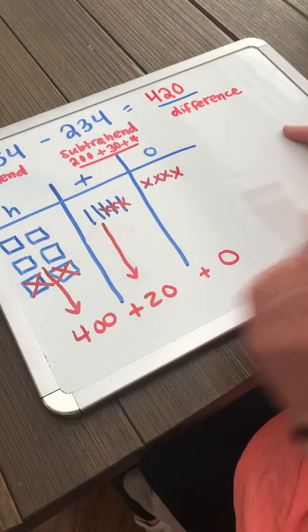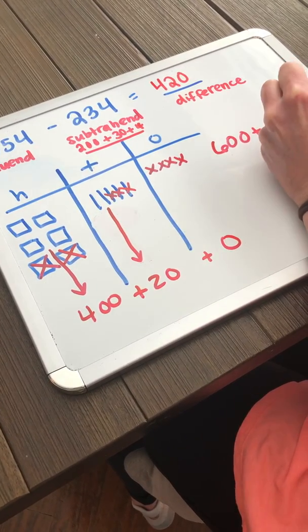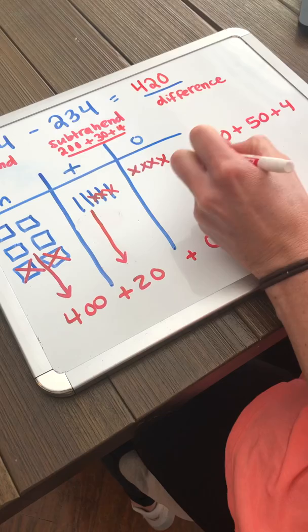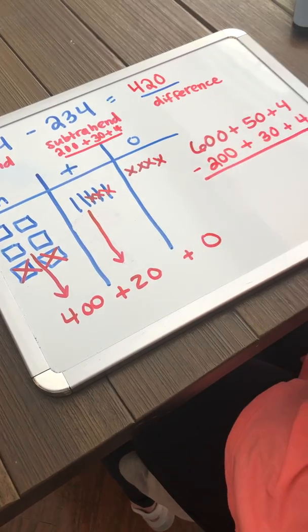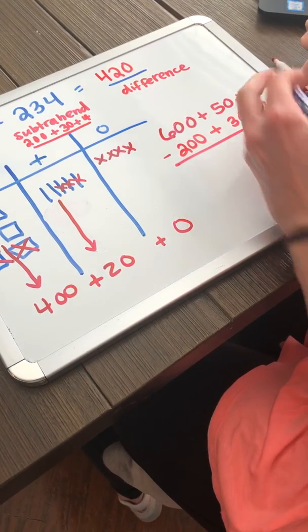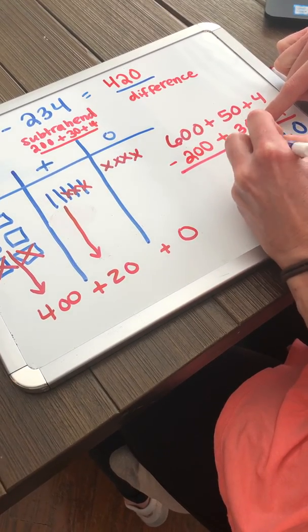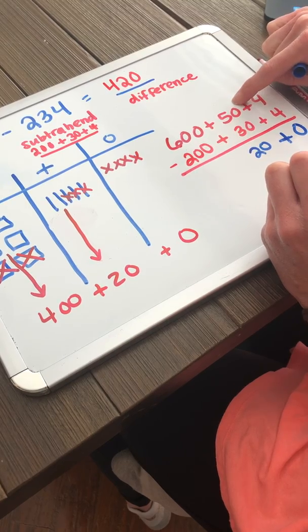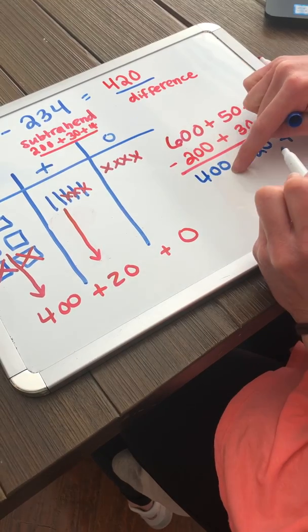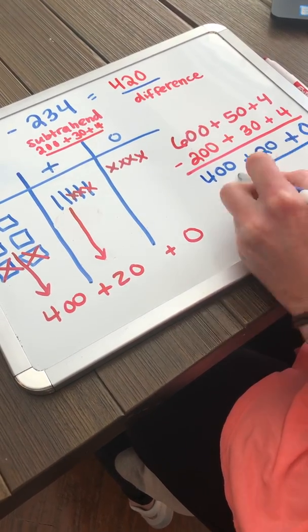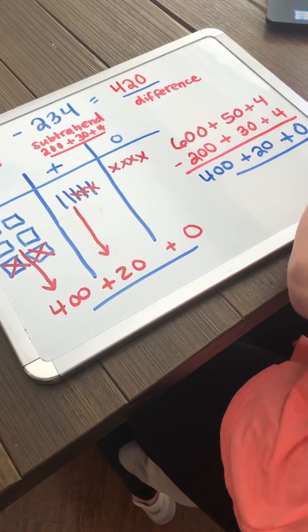Let's try this with expanded form. So I'm going to show 600 plus 50 plus 4, and I'm taking away 234. 4 minus 4 is nothing. 50 minus 30 is 20 because I know that 20 plus 30 equals 50. 600 minus 200 is 400 because I know that 400 plus 200 is 600. My answer is 420, or my difference to the problem is 420.